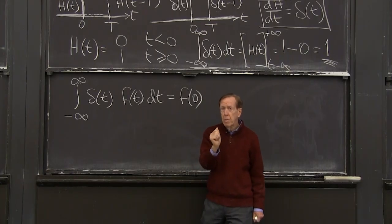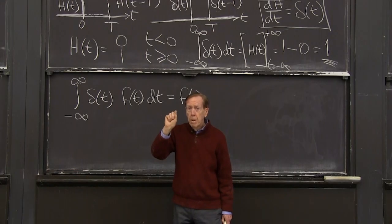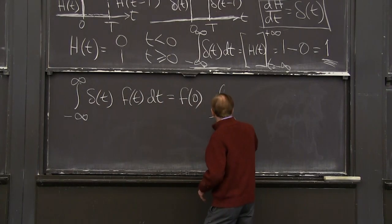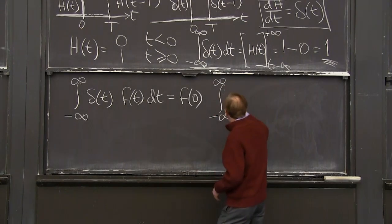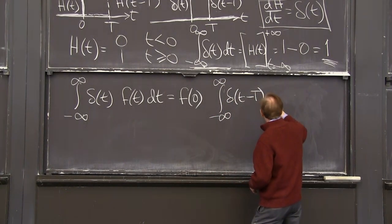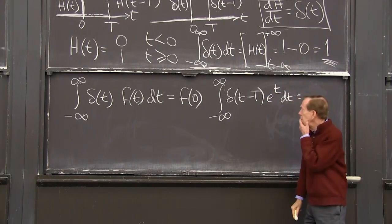So the integral of delta t e to the t dt would be 1. Because at that moment, t equals 0, the only important moment would be e to the t function is e to the 0, and it's just 1. Let me ask you for another example. The integral of minus infinity to infinity of delta, let me use the shifted delta, e to the t dt.